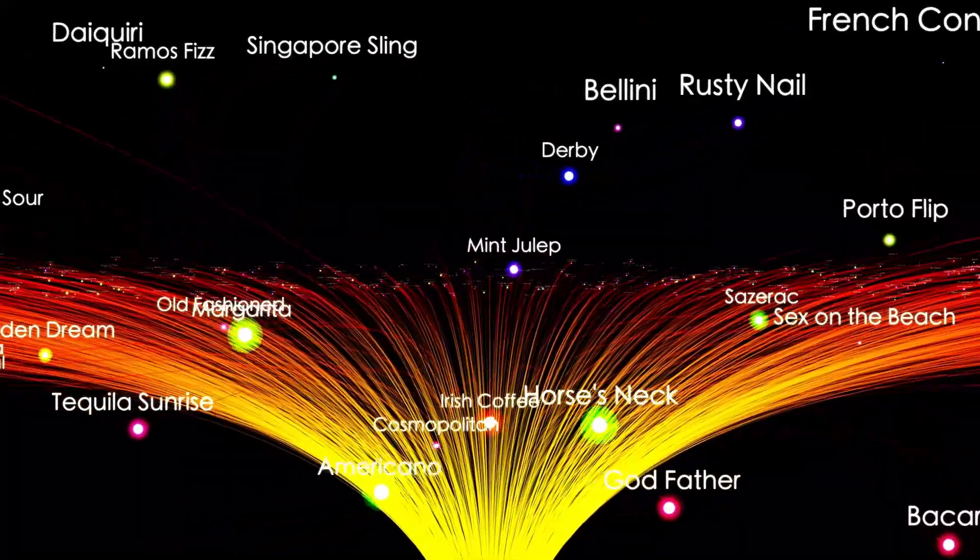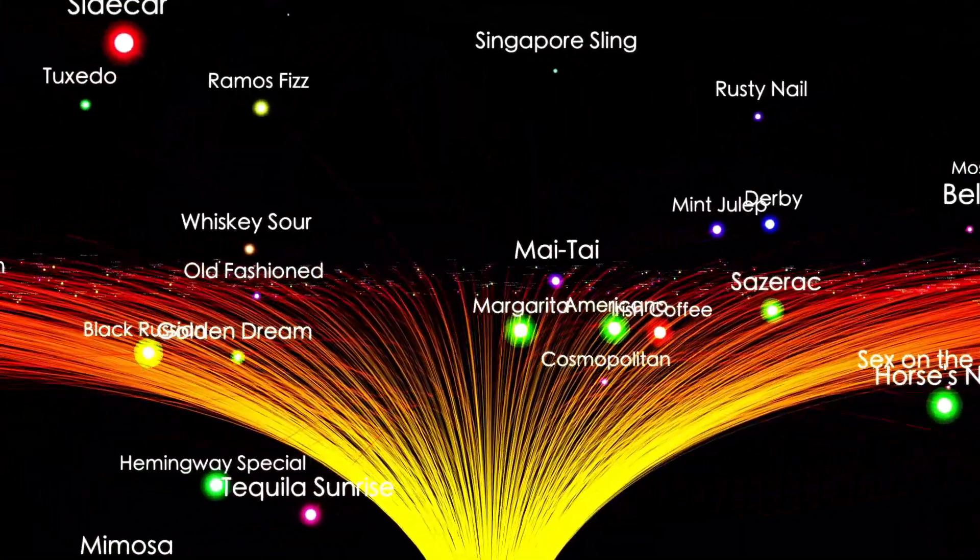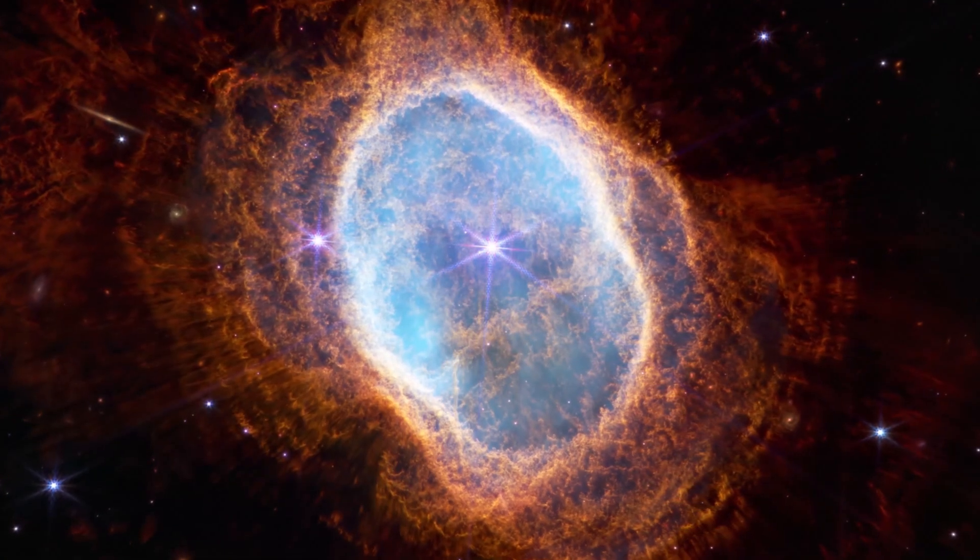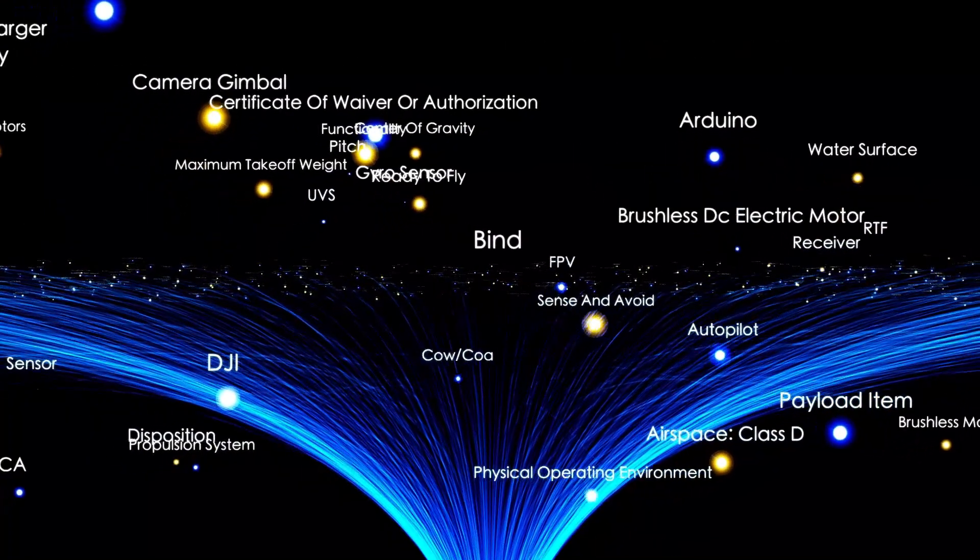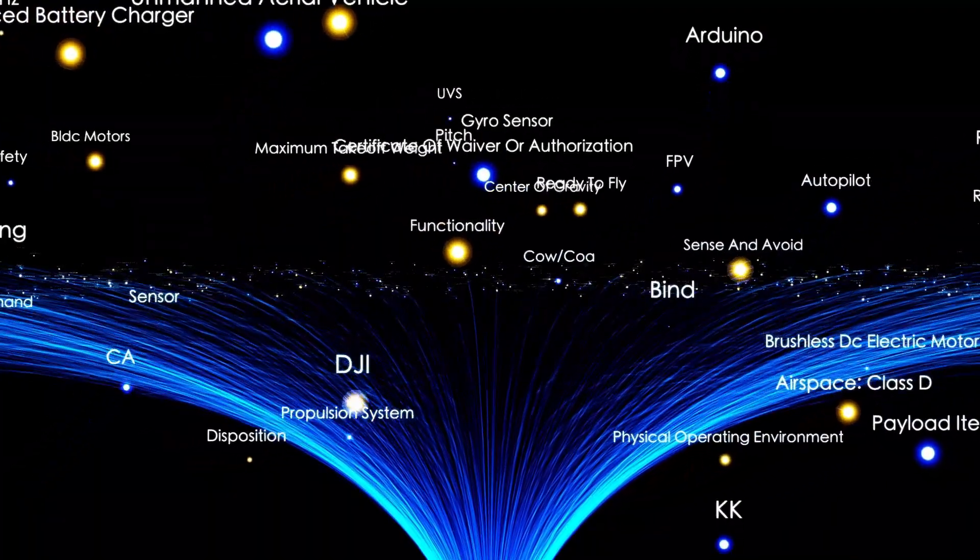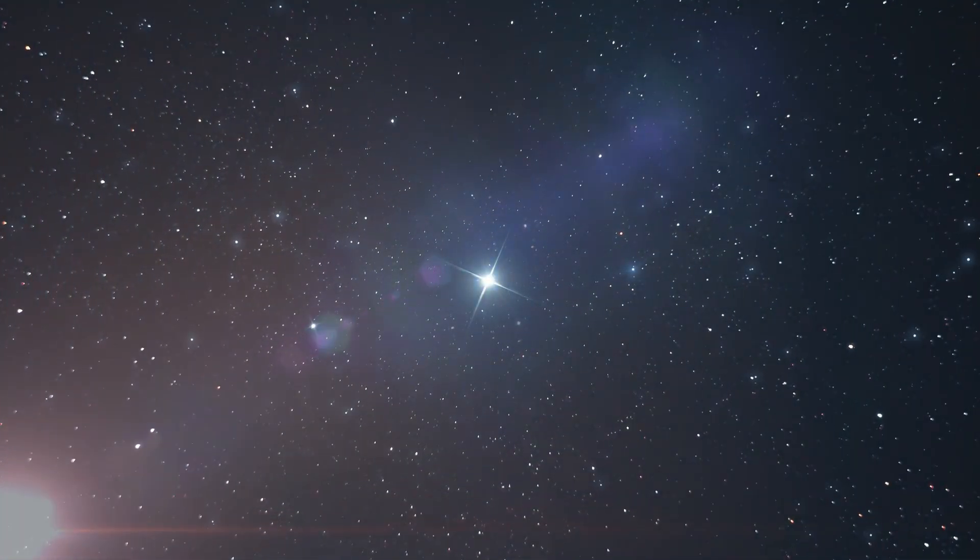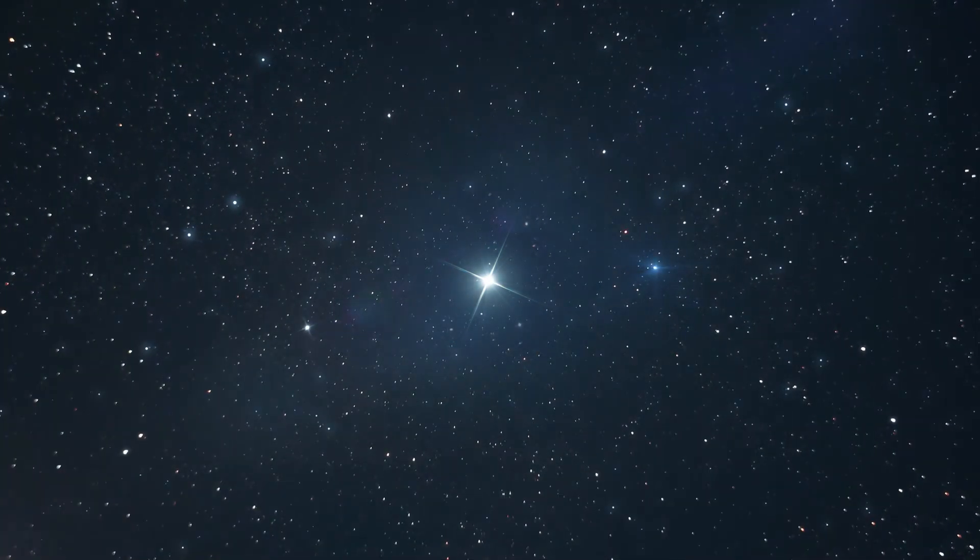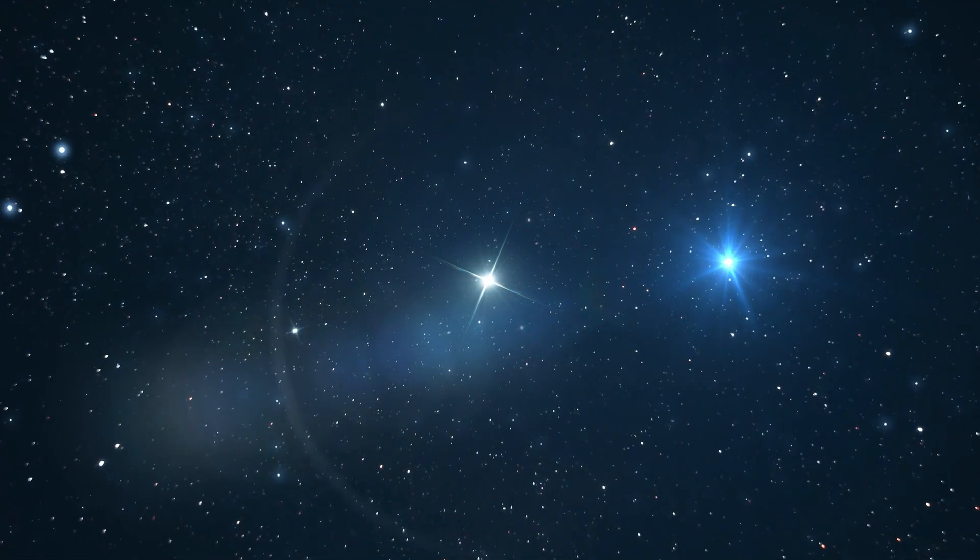The excitement surrounding the star stems from the fact that it is located approximately 650 light-years from Earth, close enough for us to observe such a rare cosmic phenomenon in real time. When the star finally explodes, it will release a stunning display of light. The first signs will be a wave of neutrinos sweeping across Earth, detectable by sensitive observatories.